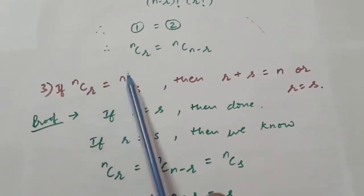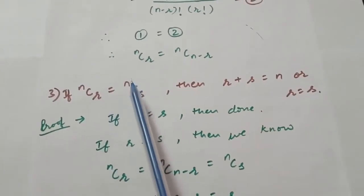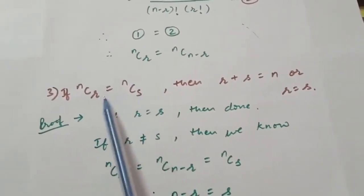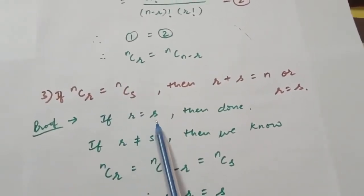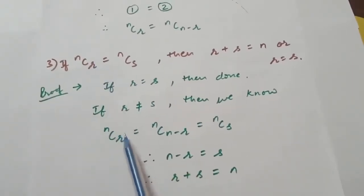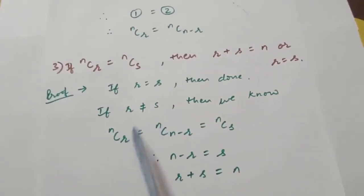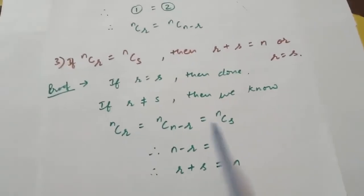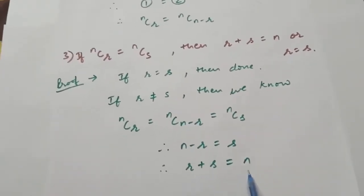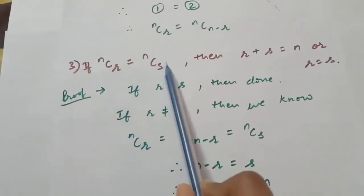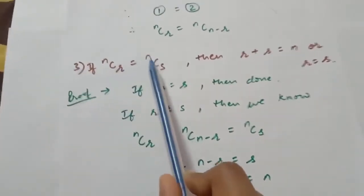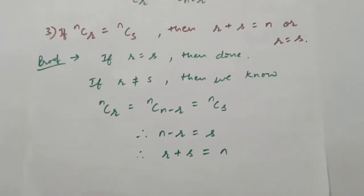Third: if nCr = nCs, then either r = s or r + s = n. If r = s, obviously these two are equal. If r ≠ s, then since nCr = nC(n−r) and nCr = nCs, this means n−r = s, and therefore r + s = n. So if two combinations are equal and r and s are not equal, their sum is surely n. You have to learn all these rules of combinations.